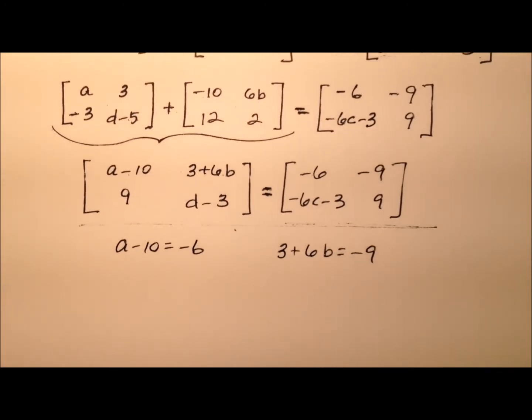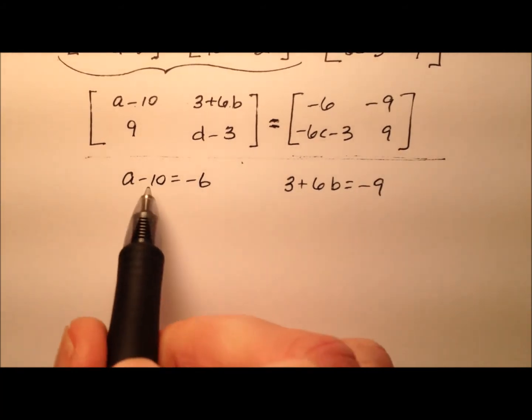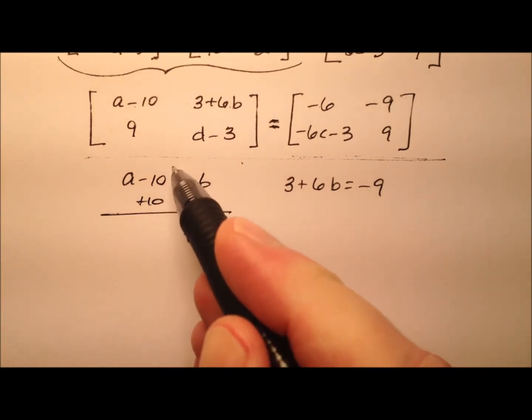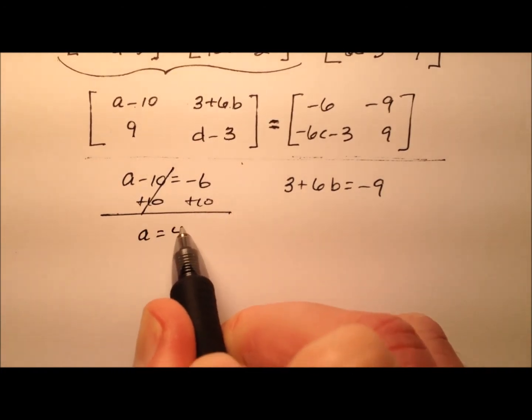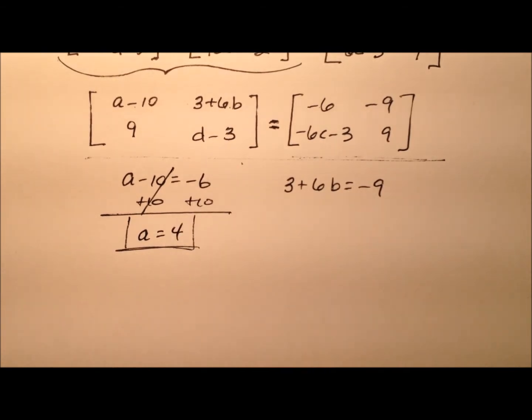Let's go ahead and tackle those first two. So I'm going to start by adding 10 to both sides of this equation to get that A all by itself. And it looks like A is going to be 4, because negative 6 plus 10 is 4.